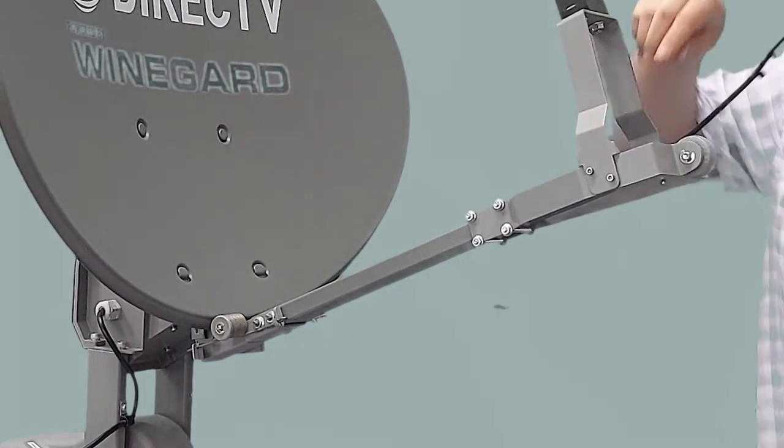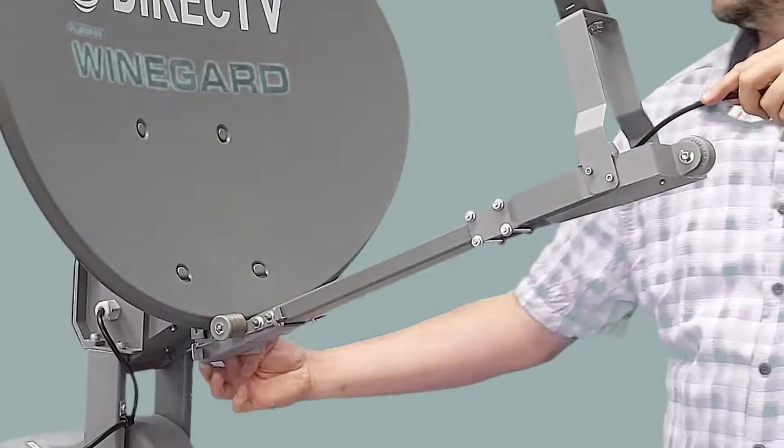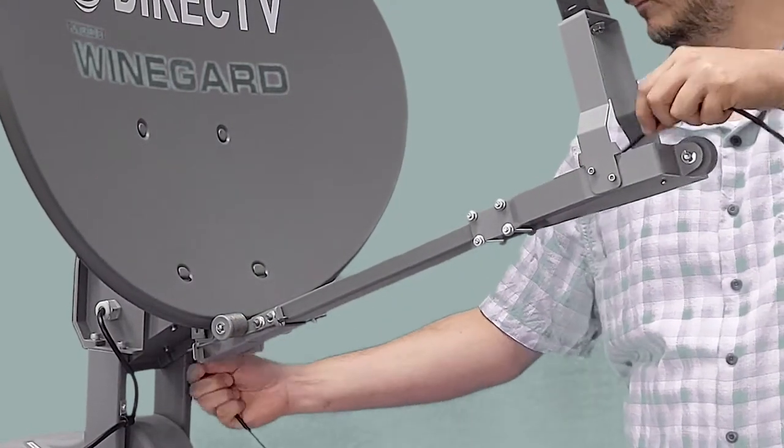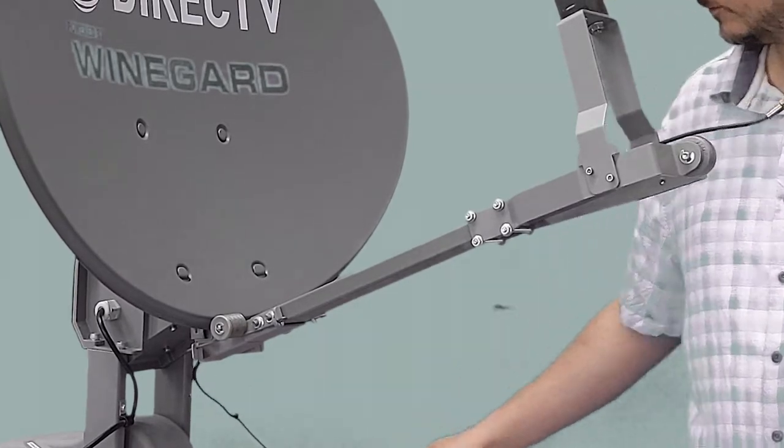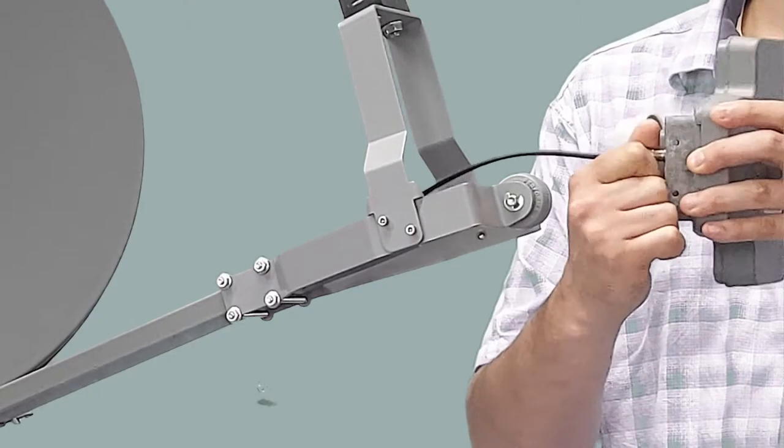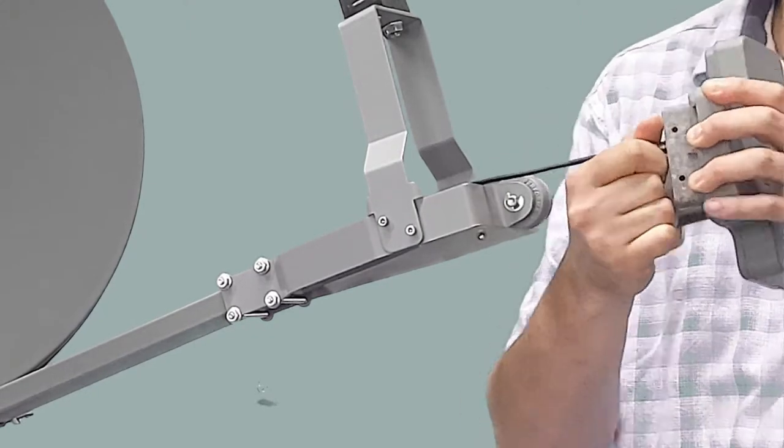Feed the replacement cable down the arm so the end with the 2 zip ties is on the turret side of the cable. Connect the cable to the LMB, tighten until finger tight, then use the 7/16ths wrench for a quarter turn more.